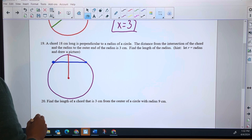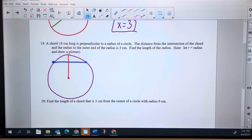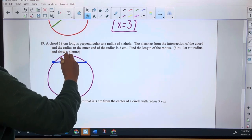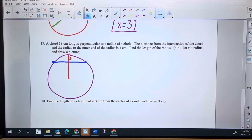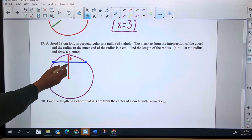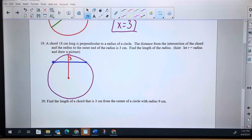The distance from the intersection of the cord and the radius to the outer end of the radius is three. That's some thinking right there. Distance from the intersection of the cord and the radius to the outer end of the radius. So this right here, that's the three right up there, from the blue line to the purple edge is three. Find the length of the radius.